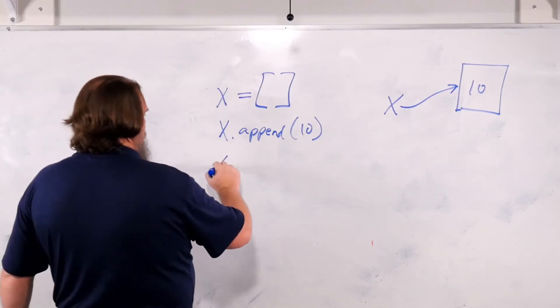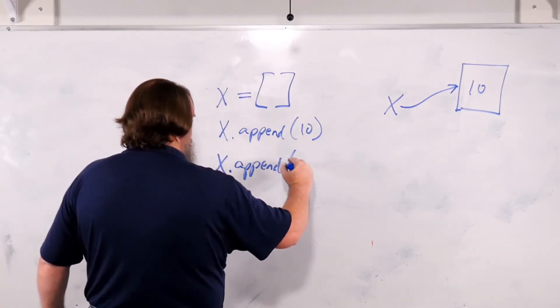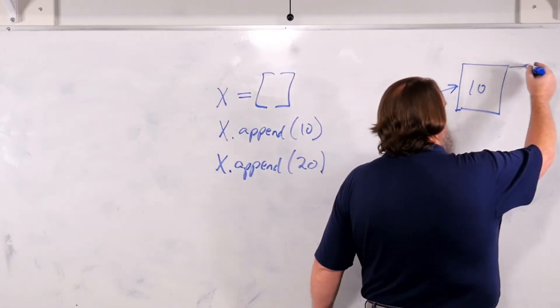If you want, you can say x dot append 20, in which case it will add to it again.